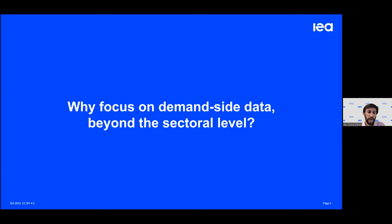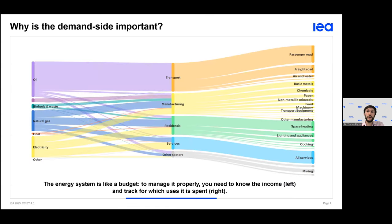Let's start with the why. Why do we need to look at the demand side of the energy system beyond the sectoral level? As for any budget, the energy system is a complex set of intertwined flows. We have incoming energy flows on the left, like revenues in a budget, and outgoing flows on the right, like expenditure. To manage a budget, you need to study both the inputs and the outputs — so here we look at the details of how we consume energy, the output side.